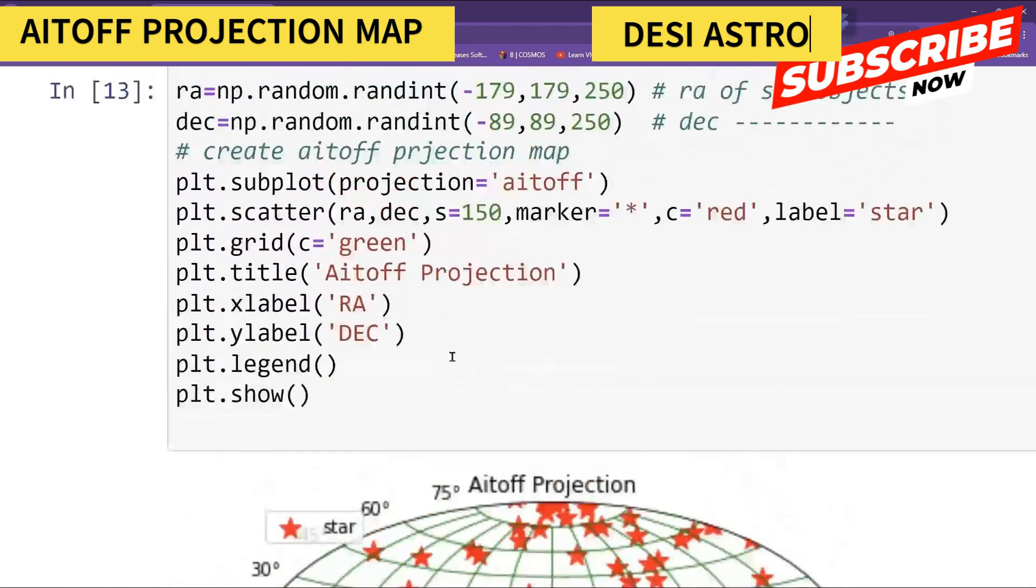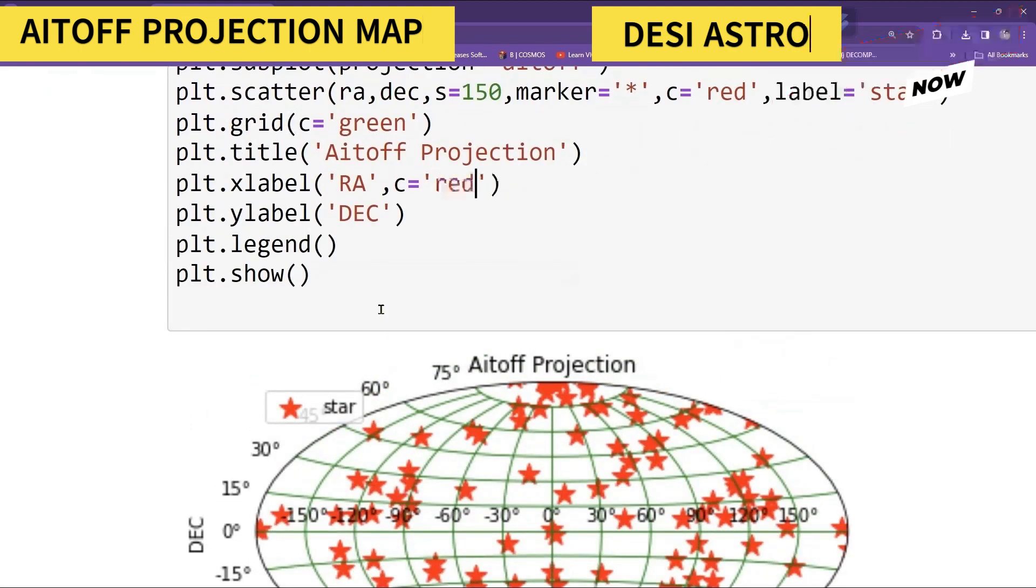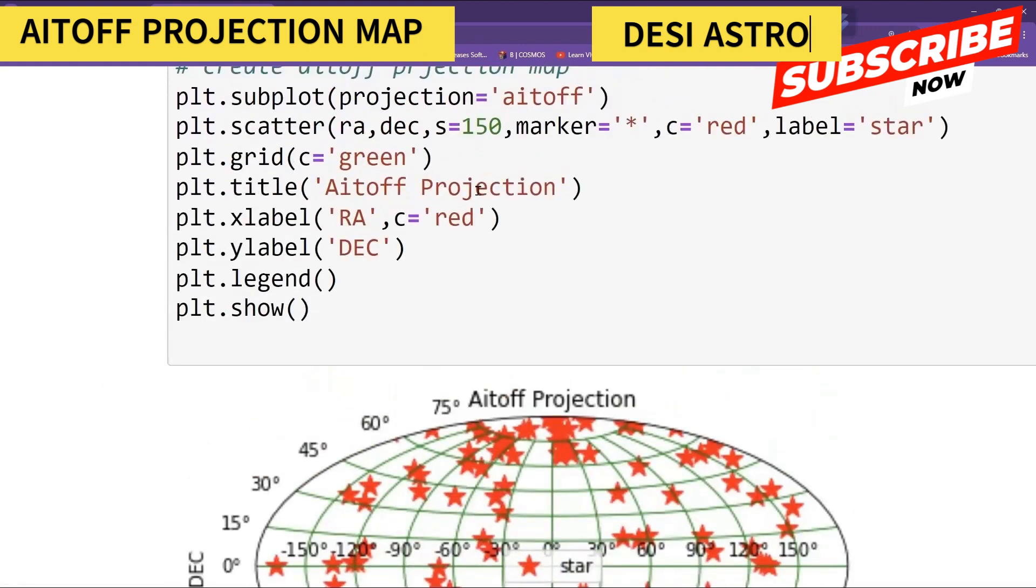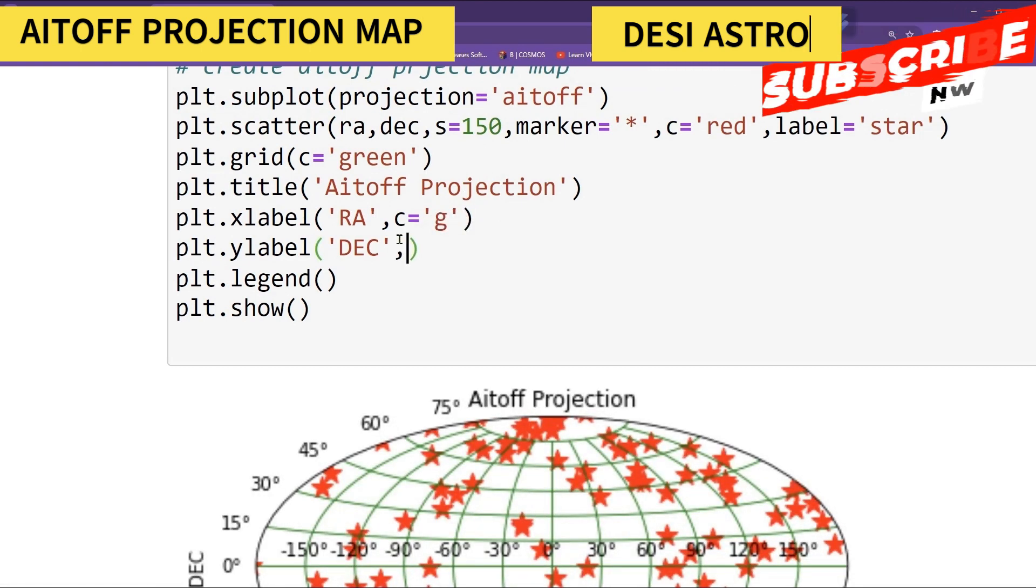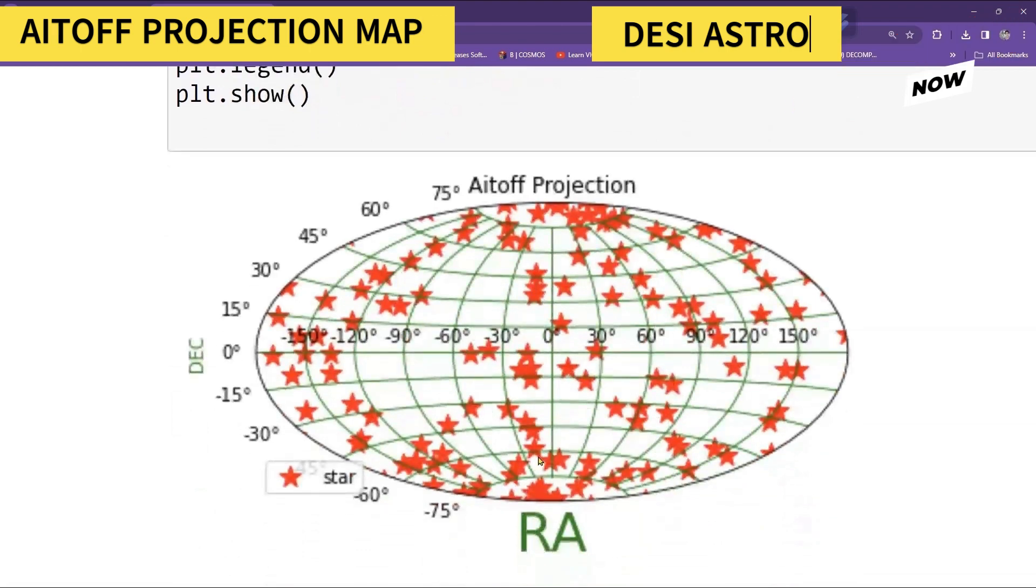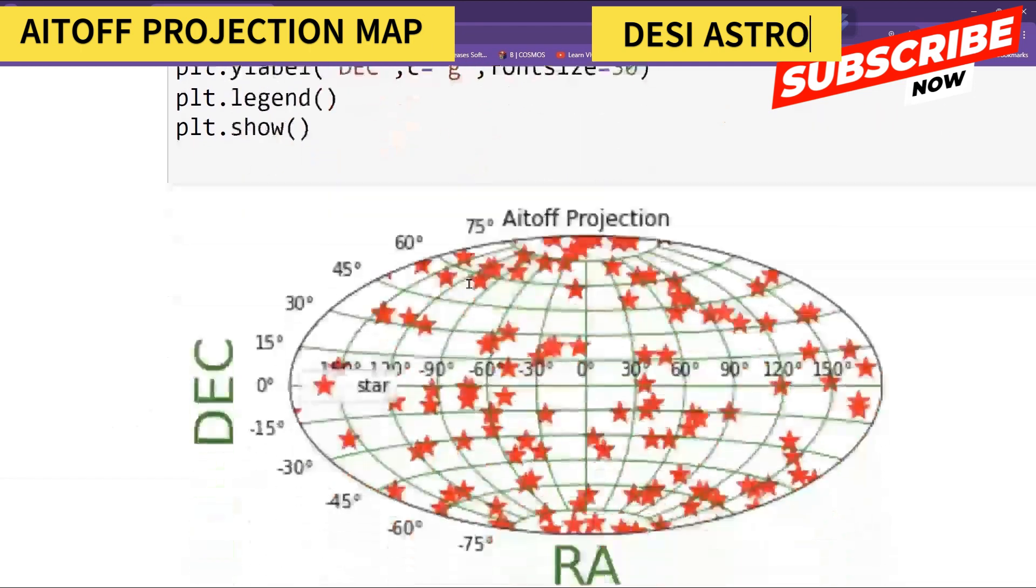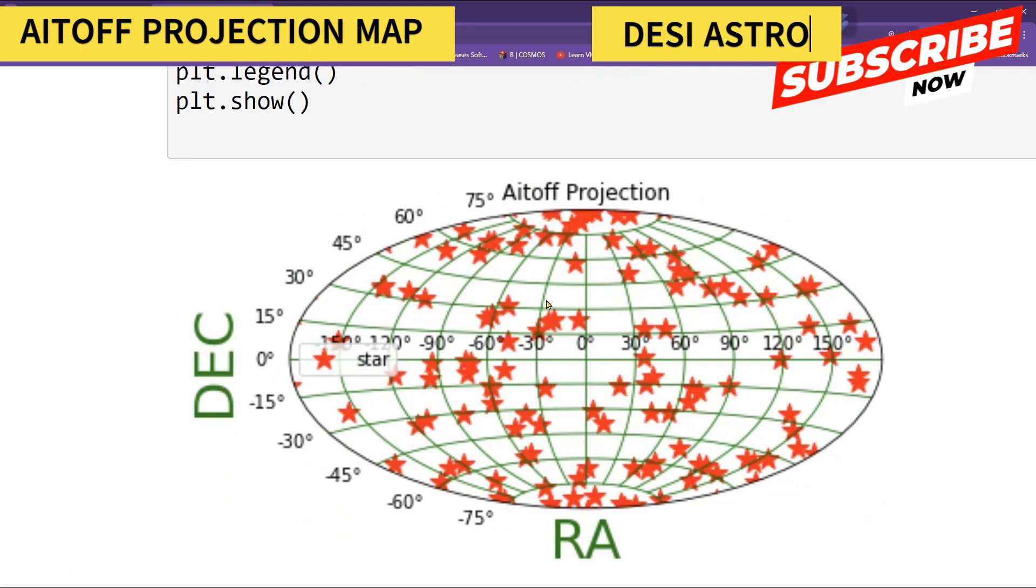You can also give different colors to this. Color you can give say red, or you can give green color. Here you can also give green color. Also give font size if you want. Font size you can give 30, to make it more bigger. And same thing you can give here. So this way you can construct Aitoff projection, right?